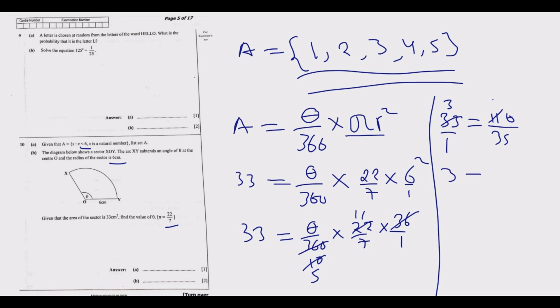So we end up with 3 equals theta over 35. When you cross multiply, theta is basically equal to 3 times 35. So 3 multiply by 5 is 15, we write 5, and 3 multiply by 3 is 9 plus 1 is 10. So we end up with 105 degrees as our answer for part B of question 10.